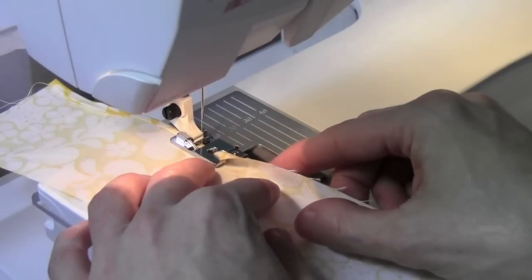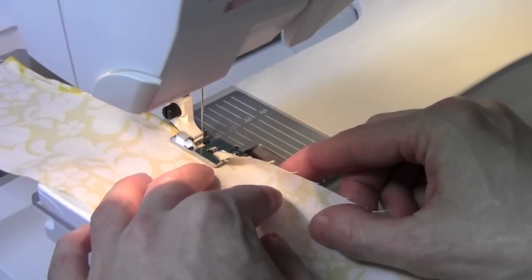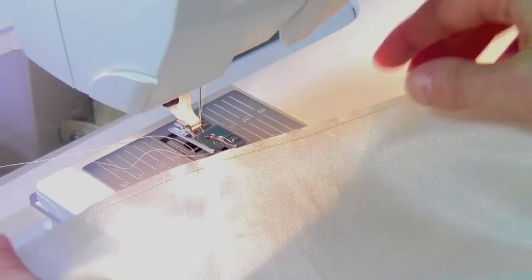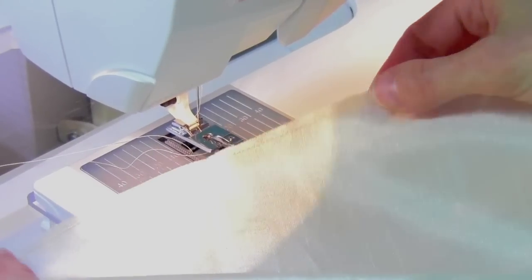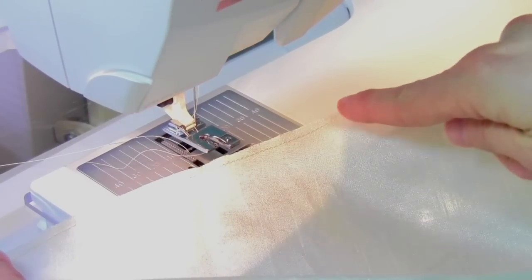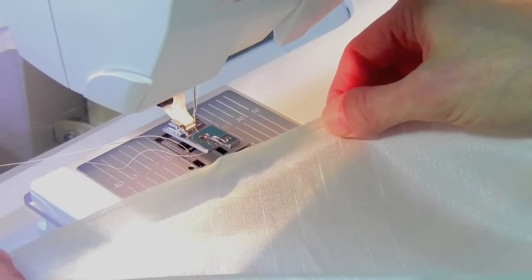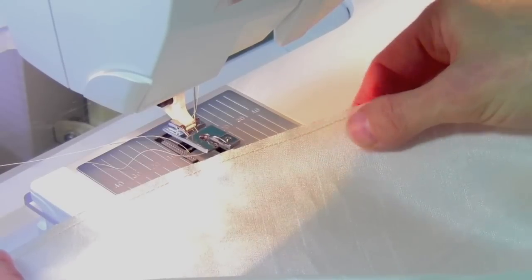Once you have it set, your foot is going to do all the work for you. If you're working on something circular, start by basting along the raw edge about an eighth of an inch from the edge. That way it's going to help prevent it from getting stretched out as it goes through the hemmer foot.